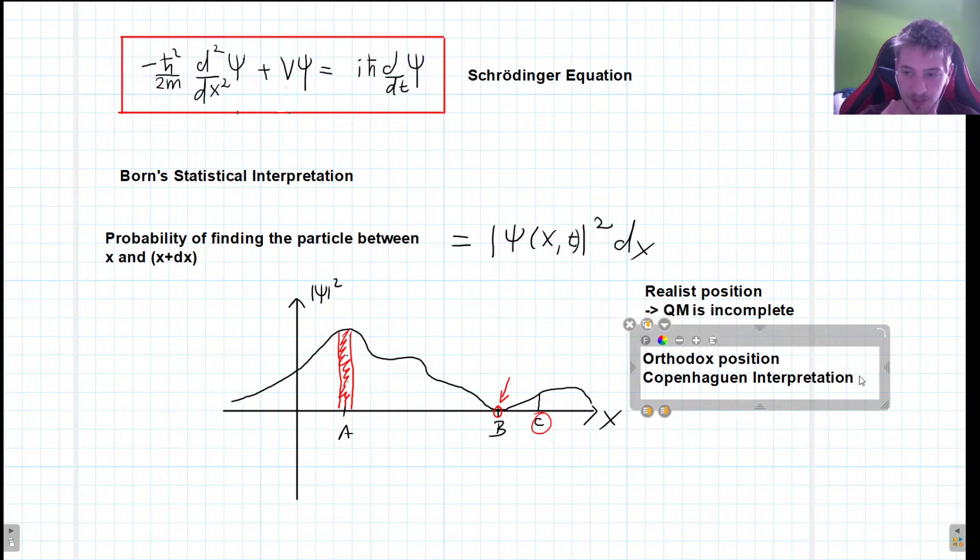This position defends this somewhat uncertain nature of our reality. It says that there's just some things that it's not that we don't know, because there is just nothing to know. The particle is not anywhere before we conduct the experiment. The particle is spread out in space as we can see in this wave function and that is just something that we have to deal with.